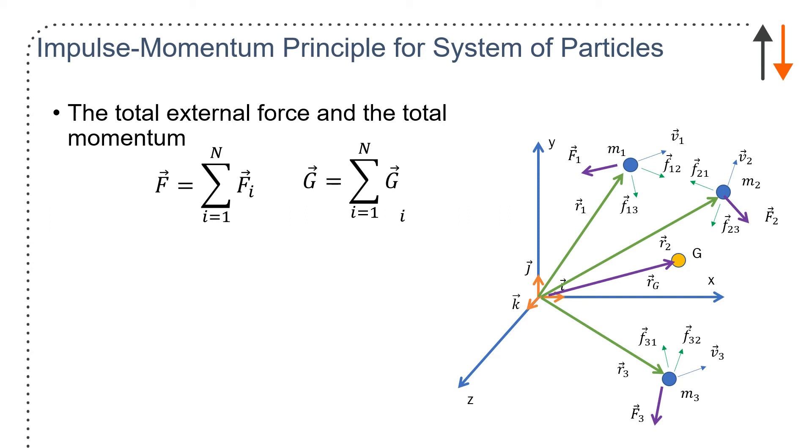So, sum of forces, total external forces, total momentum, have to be the sum of all of the individual forces acting on the body. Newton's third law tells me all of the internal forces are going to cancel—f 1,3 cancels with f 3,1, etc.